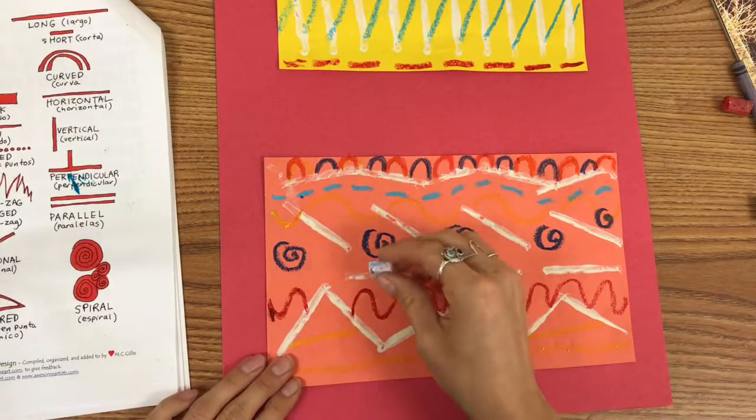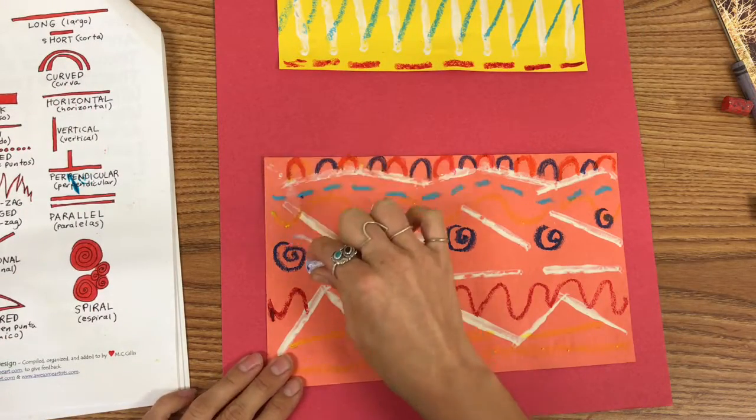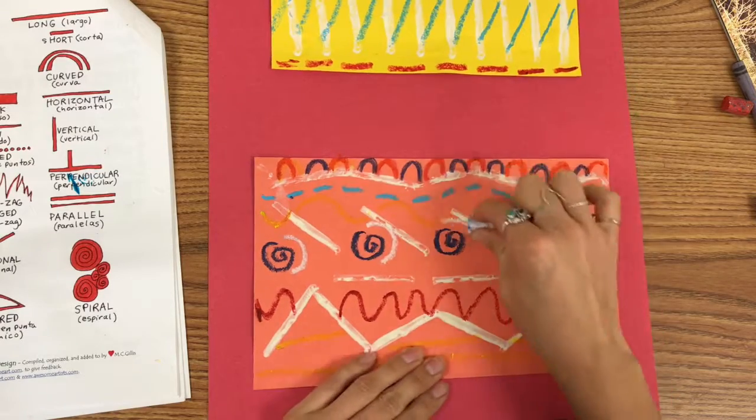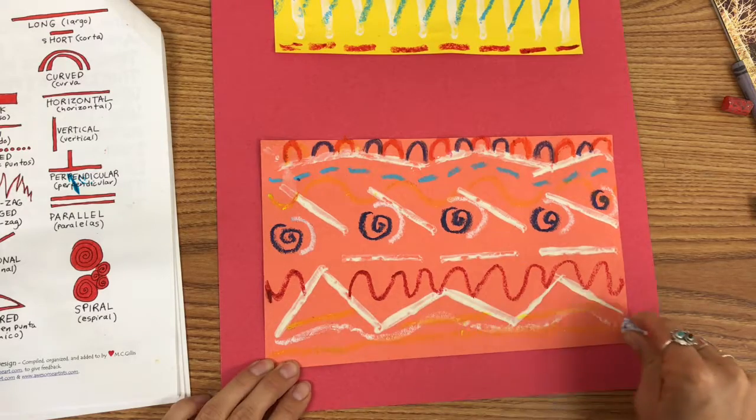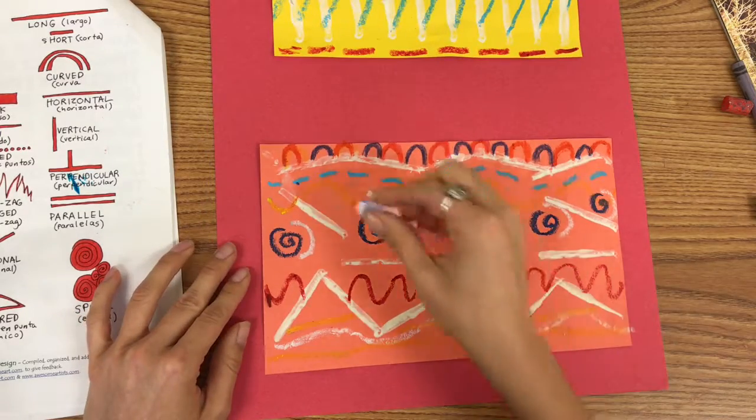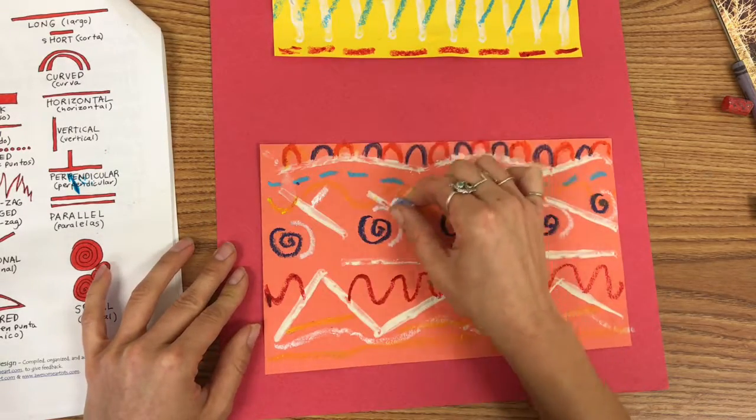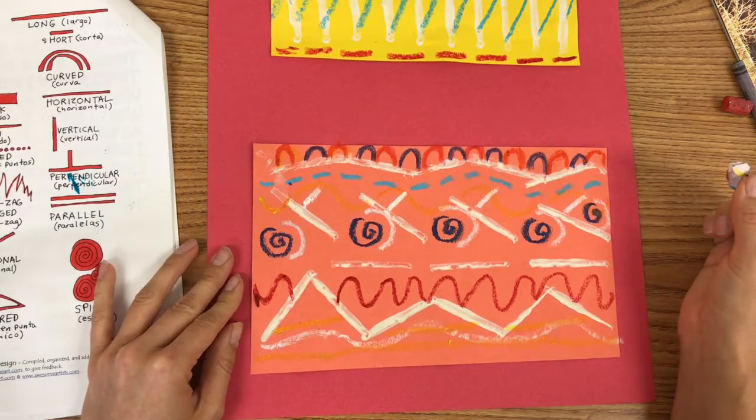And I want to add some accents here just so my picture really stands out with the white. And maybe a diagonal line here and there.